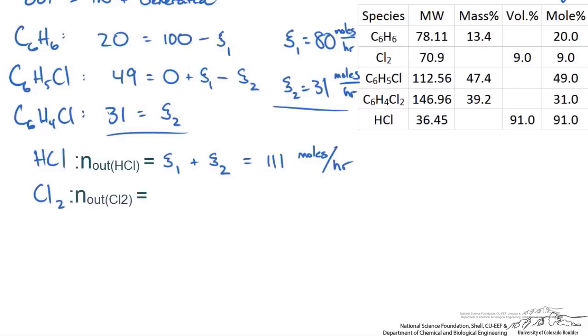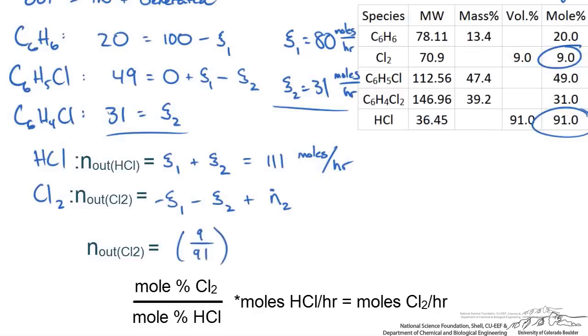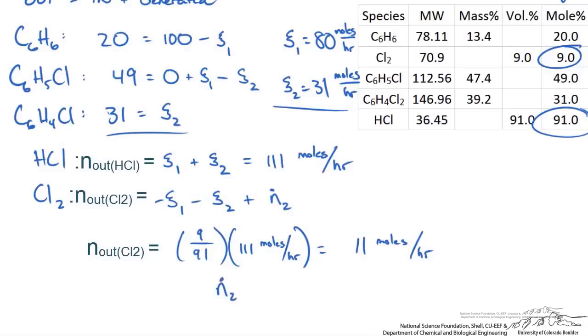For chlorine, we write this again, and out is equal to the extent of reaction 1—but we are consuming it, so there is a negative sign—minus the consumption in reaction 2, plus whatever we had coming in. We don't know this value, but we did label it as N2 in our problem statement, or M2 for the mass flow rate. Fortunately, we do know N out, or we can figure out what N out is. To determine N out of our chlorine, we know the mole percentage between HCl and the chlorine gas. We could write the N out is equal to this ratio, 9 over 91, times the amount of moles we have of hydrochloric acid. This gives us about 11 moles per hour that come out for our chlorine gas. So that means N2, or what we put into the process, is going to be the 111 plus 11, and that gives us 122 moles per hour.